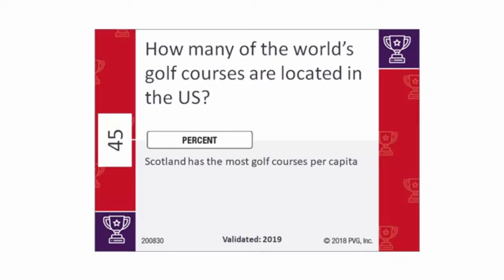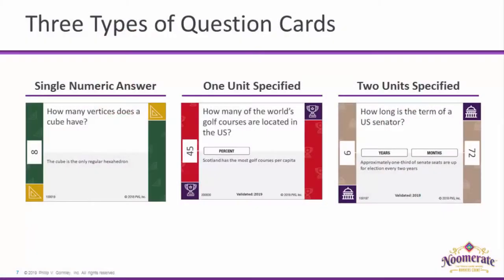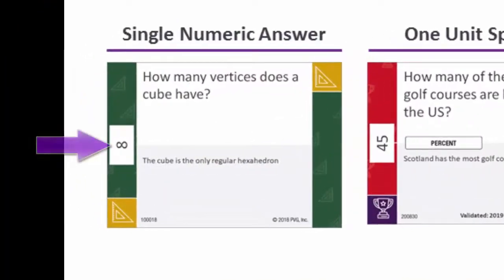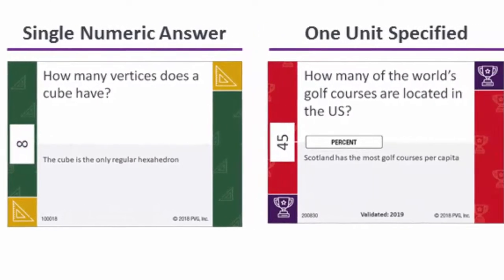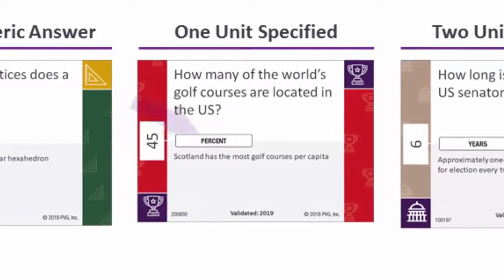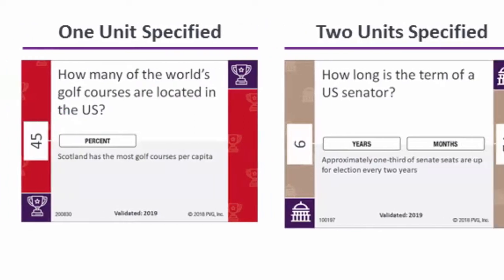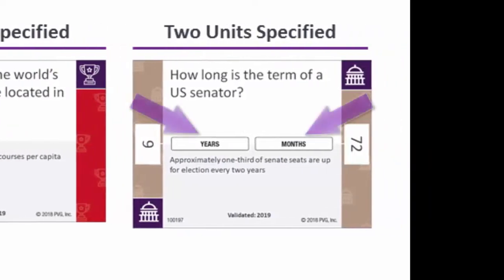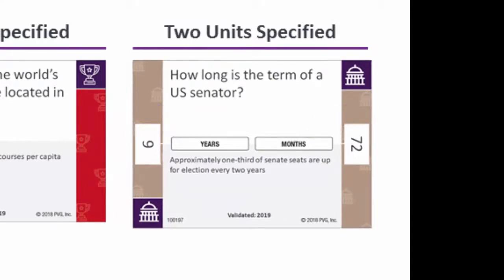The type size of the text on the actual question cards is quite small, and that will be remedied in the next version of the game. There are three types of question cards. The first just has a simple numeric answer. For the second, units are specified, and the card reader needs to tell the other players the units expected. And for the third, there are two unit options offered, and the reader needs to tell the other players those options.